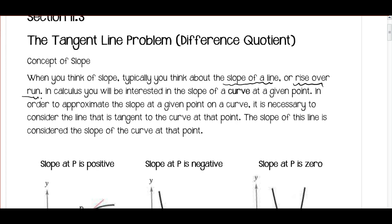In calculus, what we're going to be interested in is the slope of a curve at a given point. Depending on the point that you've picked, the slope at that point is going to be different. In order to approximate the slope at a given point on a curve, it's necessary to consider the line that is tangent to the curve at that point. We're still looking for the slope of a line, but now we're looking for the slope of a line that's tangent to the curve at a certain point. The slope of this tangent line is considered the slope of the curve at that point.